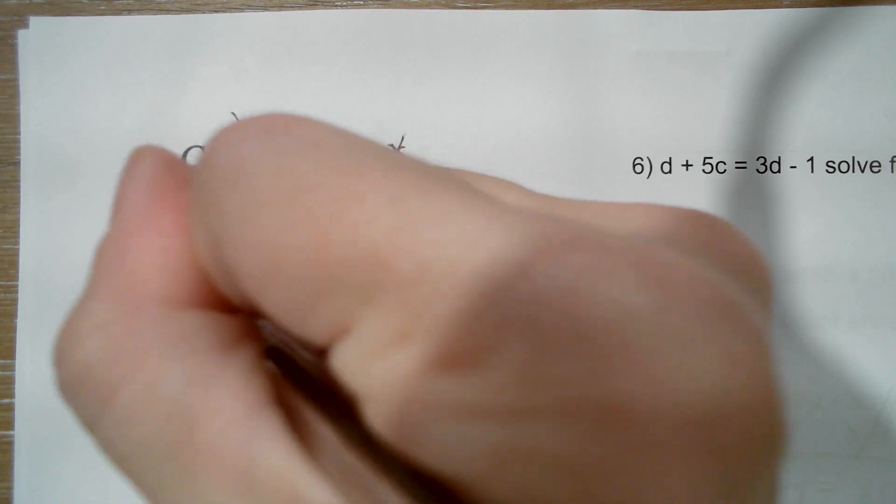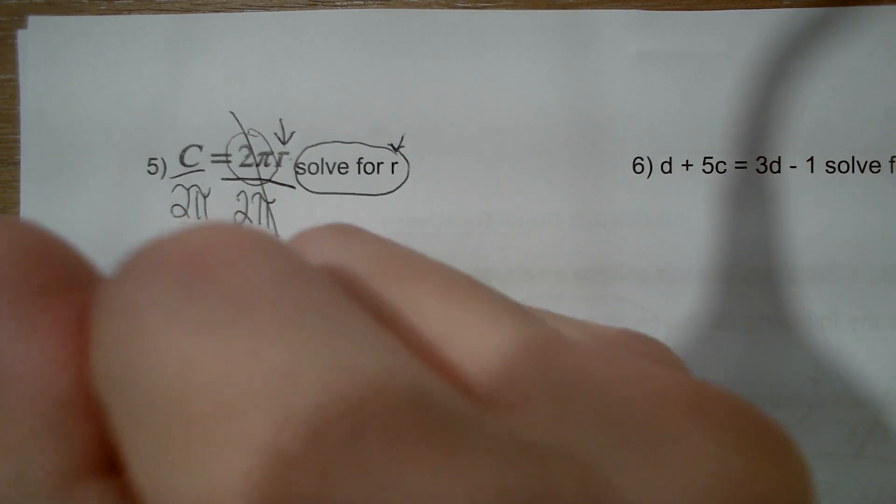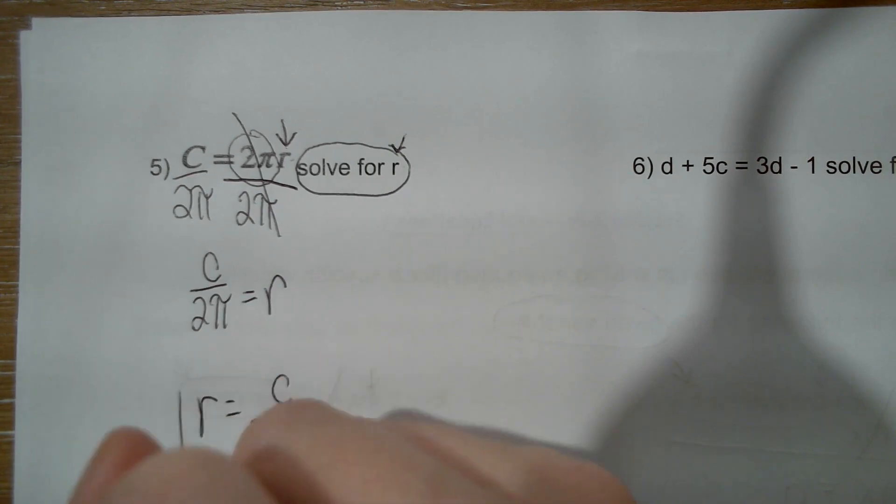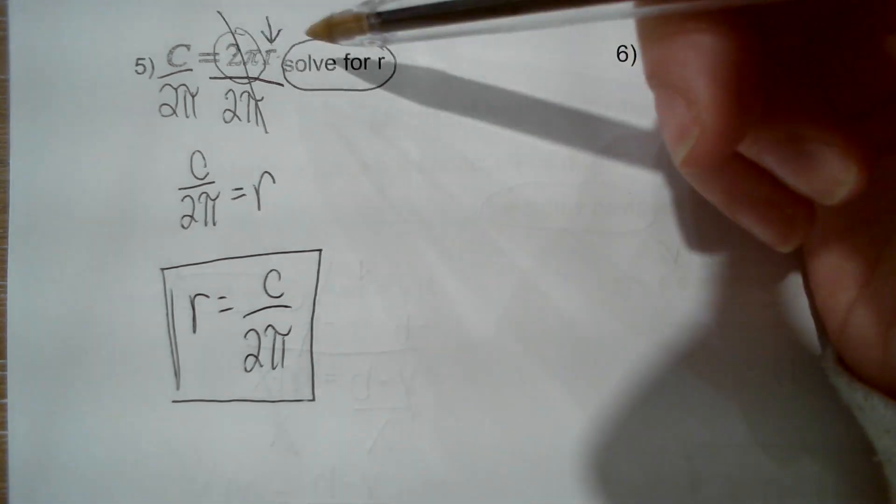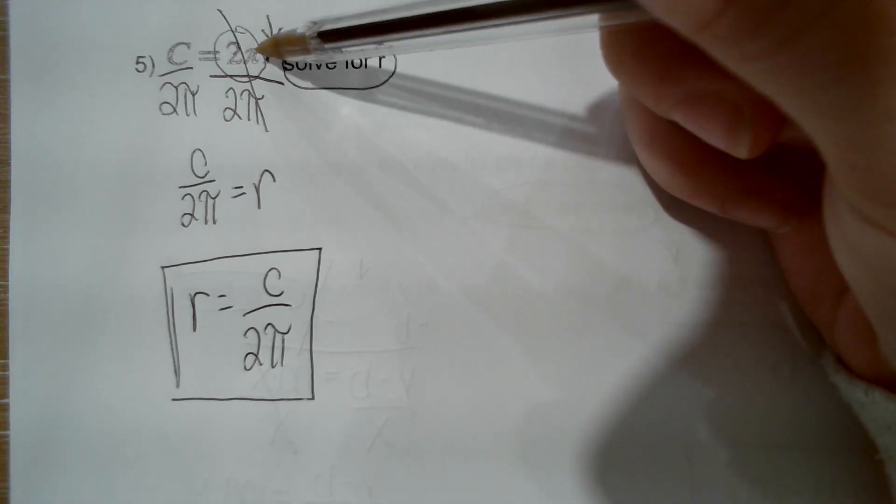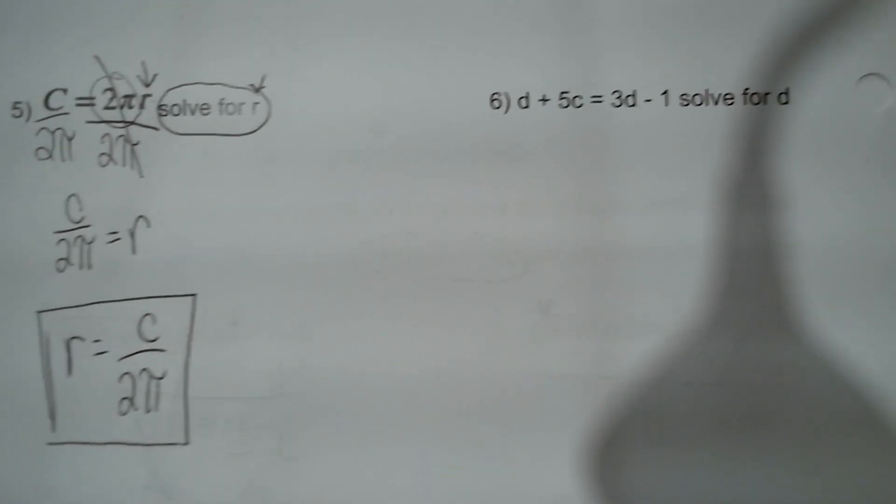So I'm going to divide the two pieces I'm trying to move. I want R alone, so I need to move the 2 and the pi, and they're both being multiplied, so I can just divide by 2 pi. Divide by 2 pi. And that leaves me with c over 2 pi equals R. So R equals c over 2 pi. There you go. So now if we know the pi, which we always know, and the circumference, now we can find the radius of a circle.